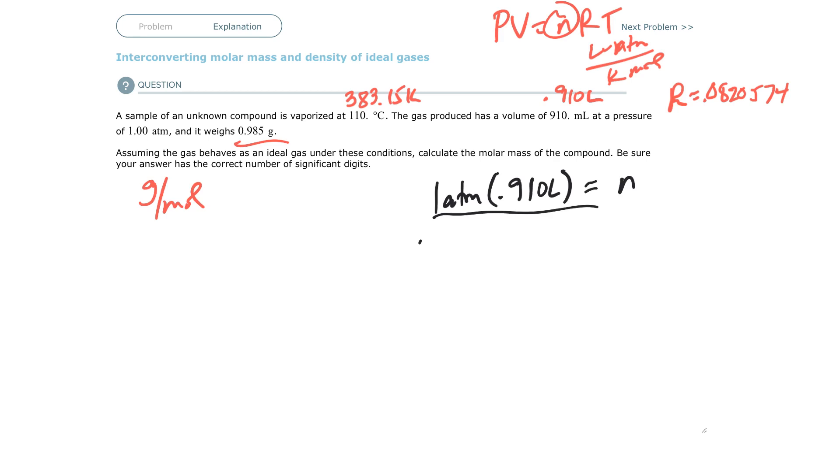R, since it's atmospheres, has to be 0.0820574 liter atmospheres over Kelvin moles. And then T has to be in Kelvin, 383.15.